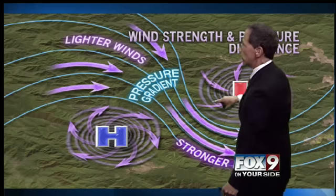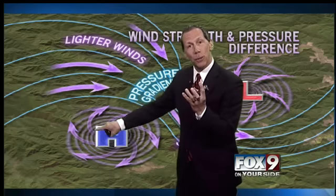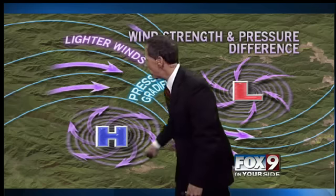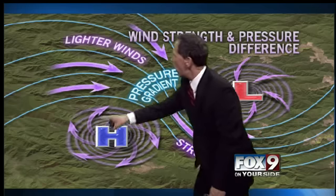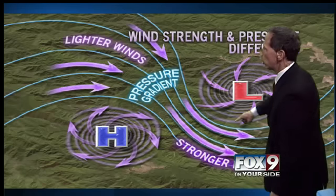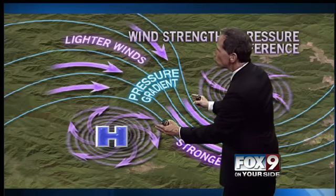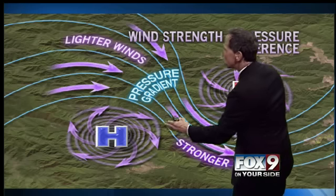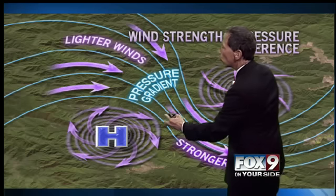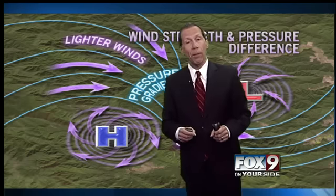But it doesn't go straight from high to low. It goes clockwise around high pressure because of the earth spinning — it's called the Coriolis effect. So the air will spin out of high pressure clockwise and then go into low pressure. And what happens between the two is the pressure gradient is tighter, there's more force, so the wind is blowing stronger in those locations — and that's what's causing wind to form.